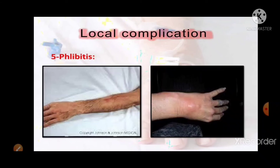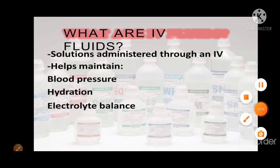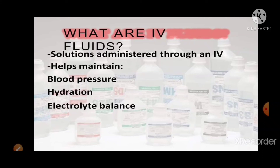IV fluids are solutions administered through an IV to help maintain blood pressure, hydration, and electrolyte balance. They are liquids given to replace water, sugar, and salts when a patient is ill or having an operation and cannot eat or drink normally. IV fluids are given straight into a vein through a drip. There are three types: isotonic, hypotonic, and hypertonic.